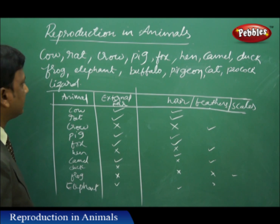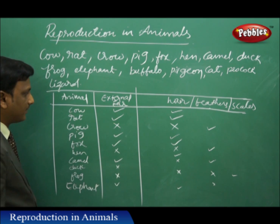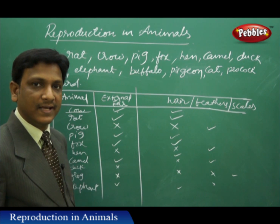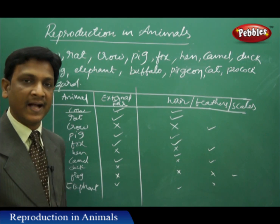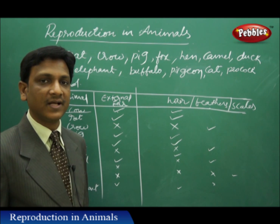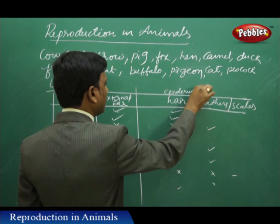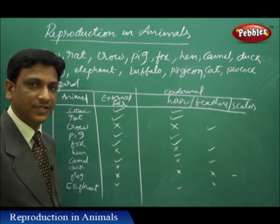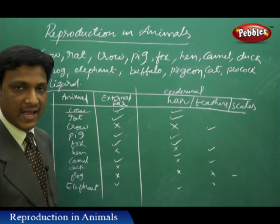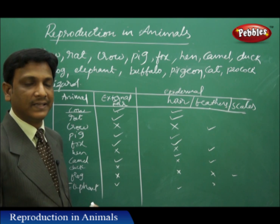So even buffalo, pigeon, cat, peacock — if you observe, we can find that we have sorted out some of the animals. Here what can we observe? The animals that have external ear, they have hairs, and they give birth to young ones. So from this table we can understand that the animals which give birth to young ones have characteristic features like external ear and epidermal hairs. Whereas the animals that lay their eggs have either feathers or scales and do not have any external ear.